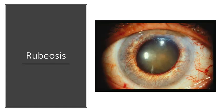Rubiosis occurs with proliferative diabetic retinopathy and is simply neovascularization at the iris. You can see new blood vessels growing through the iris, which is definitely not a normal state of affairs.